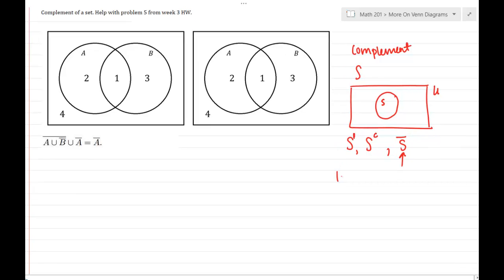And all this means is take your universal set and subtract S, so it's just everything outside of S.